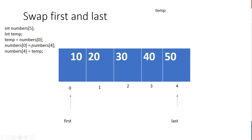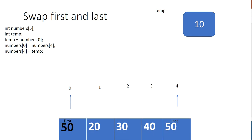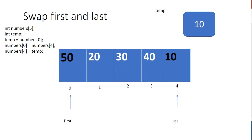If we look at a code snippet, swapping elements is very easy using a temp variable. We declare a temp variable, store the value 10 in temp, then write over element zero with whatever is in element four. Then we copy temp back into element four. So now we've swapped the first and last elements.